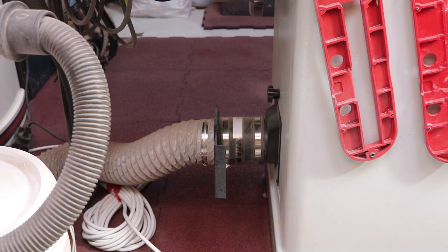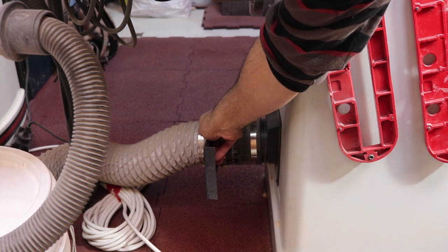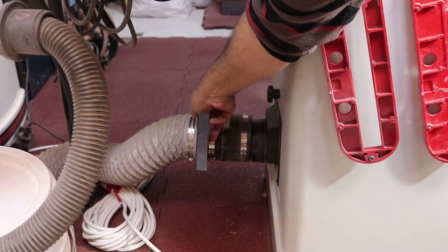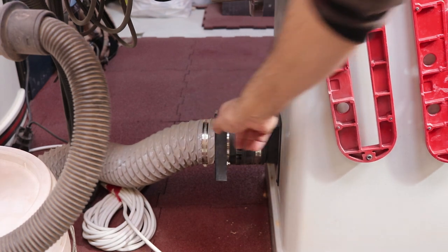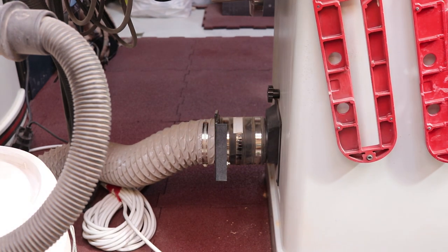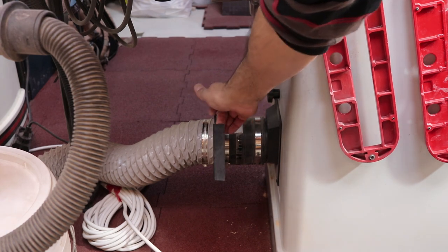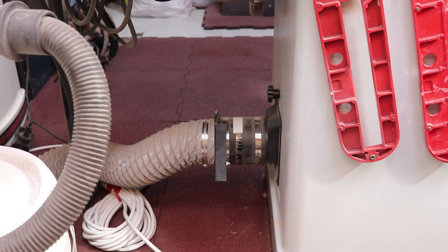Most table saws have this dust extracting adapter where you can fit the dust extracting hose to reduce the amount of dust accumulating inside the saw cabinet. It comes in different sizes from 2 to 4 inches depending on the size of the saw.